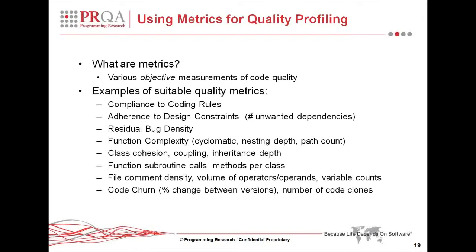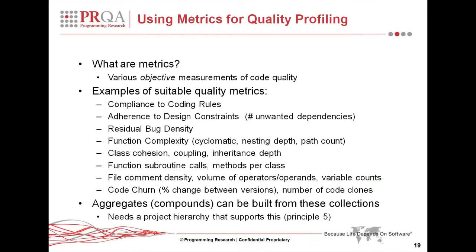We have file comment density, volume of operators, operands, and variable counts. Lastly, we have measures of how much you change the code between versions — a measure called code churn. The number of code clones is an interesting one, which looks at how much replicated code you might have within your project.